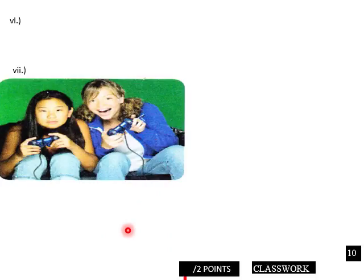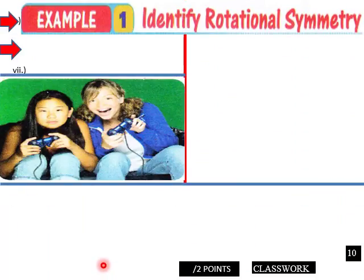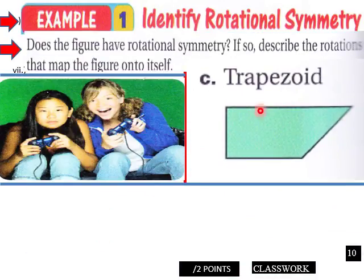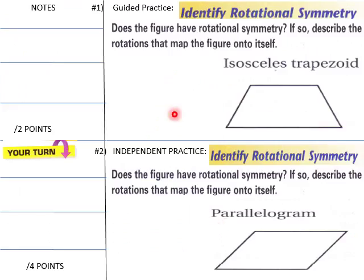Another example: identify rotational symmetry — we have a trapezoid. Does the figure have rotational symmetry? If so, describe rotations that map onto itself. Here are the bases and the legs of this trapezoid. No — a trapezoid does not have rotational symmetry.